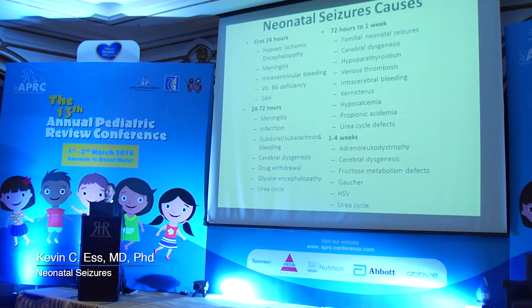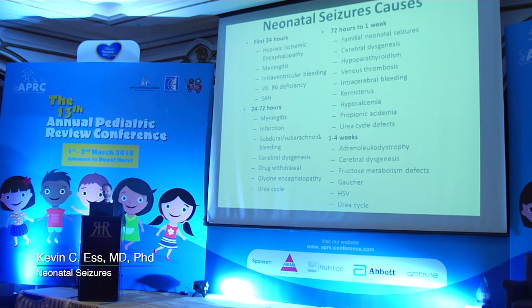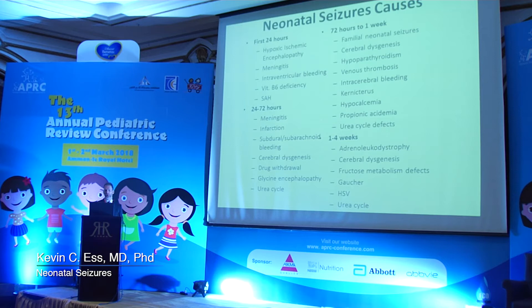The next couple of days, we have more concerns about an actual stroke in babies—another topic altogether, but stroke is relatively common. There's bleeding as well as cerebral dysgenesis or brain malformation; these are common reasons we see intractable seizures in young babies. Other genetic conditions are also seen. Moving forward to three days to a week, we start to see other genetic and metabolic disorders—things that are potentially treatable. And in the one-to-four week period, we have adrenal leukodystrophy, structural changes in the brain, and other metabolic diseases that can be picked up and treated somewhat effectively.